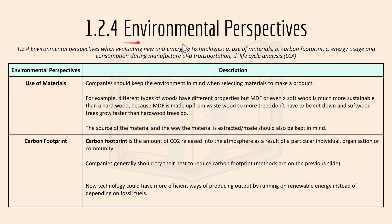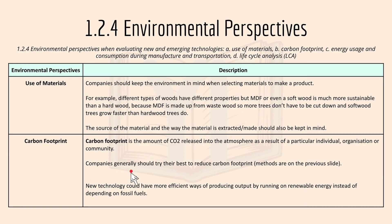Now 1.2.4, which is environmental perspective, focusing on the use of materials and carbon footprint. Companies should keep the environment in mind when selecting materials. For example, MDF or softwood is much more sustainable than hardwood because MDF is made from waste wood so more trees don't have to be cut down, and softwood trees grow faster than hardwood trees. The source of the material and the way it is extracted or made should also be kept in mind. Carbon footprint is the amount of CO2 released into the atmosphere as a result of a particular individual, organization, or community. New technology could have more efficient ways of producing output by running on renewable energy instead of fossil fuels, such as electric vehicles, solar panels, or wind power.